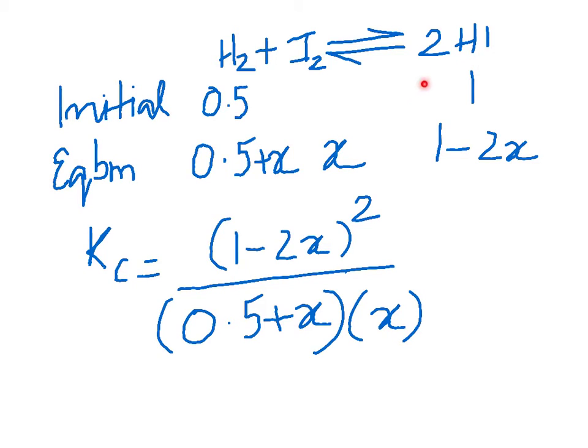So what you'll be left with is 1 to start with minus the 2x that got broken down. You've got x, and you had 0.5 to start with and you added another x to it when 2x of HI got converted. So these are your final moles: 0.5 plus x, x, and 1 minus 2x. You need to divide these by the volume which in this case is 1, so you can ignore it. So the equilibrium constant will really be